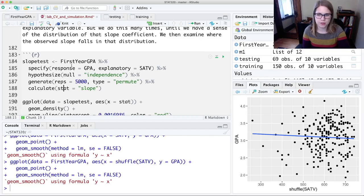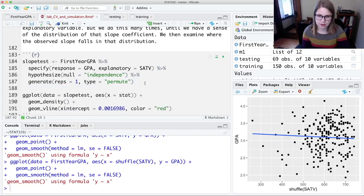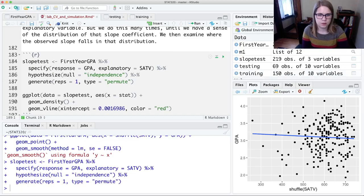So we could break this down into smaller pieces. Like I could do just one rep and not calculate the stat there. So if I do this, I'm just going to get one permuted sample. So let's see, slope test,